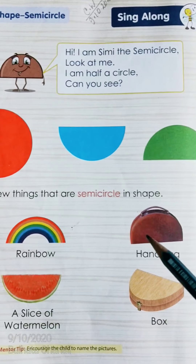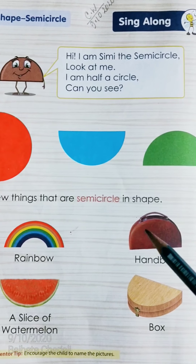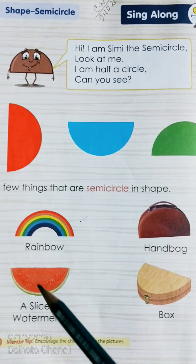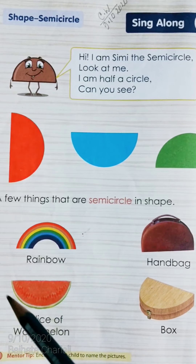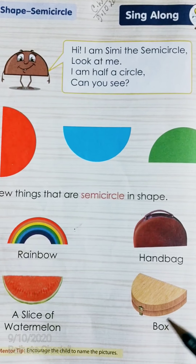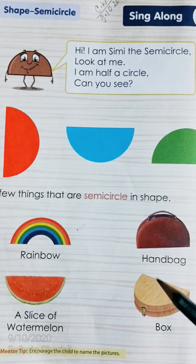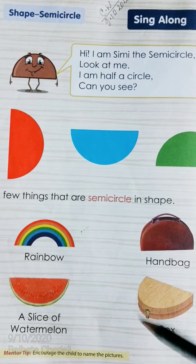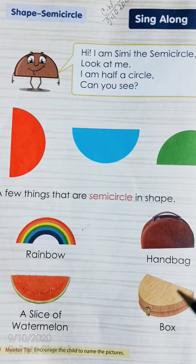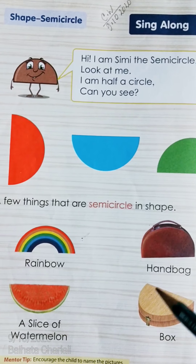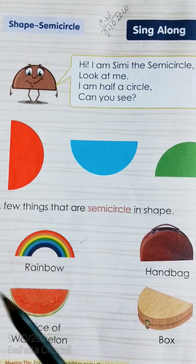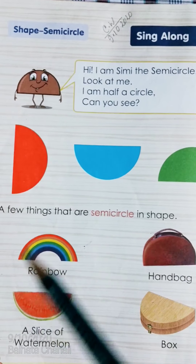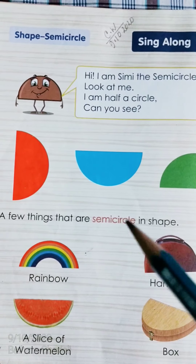This is the picture of a handbag and the handbag is semi-circle in shape. This is the slice of watermelon — this is the picture of the semi-circle shape. And this is a box. It is not a full circle but it is a half circle, so this is the picture of the semi-circle shape. You can tell me some other things that are semi-circle in shape.